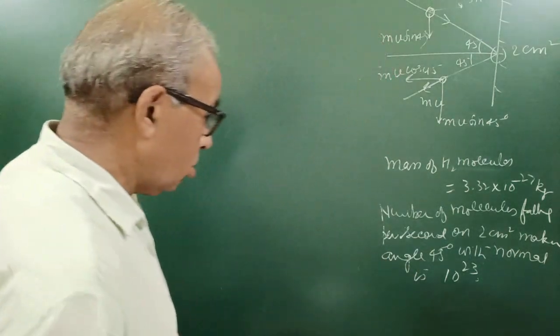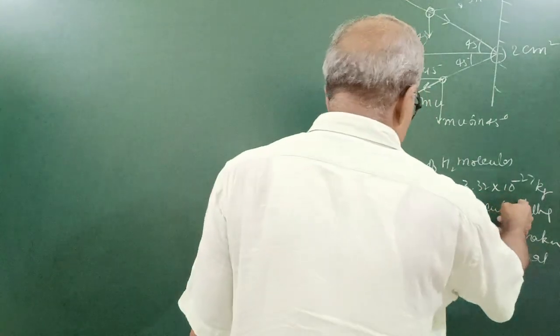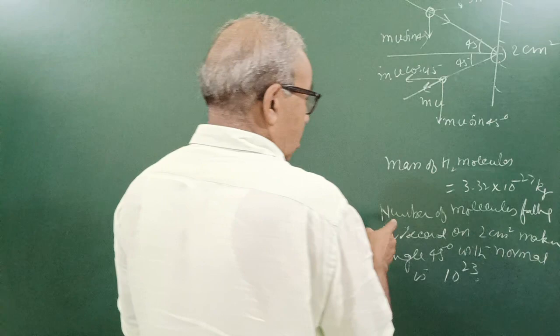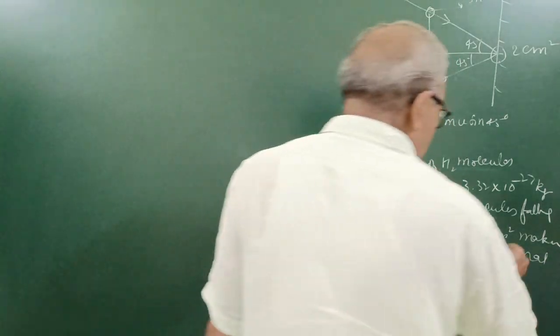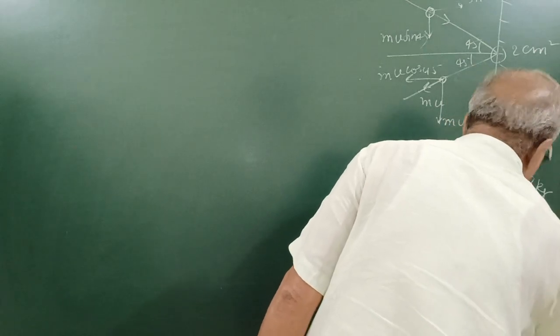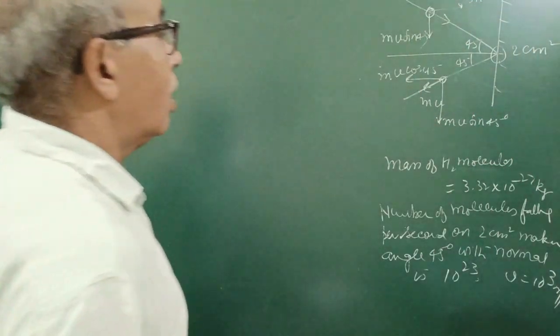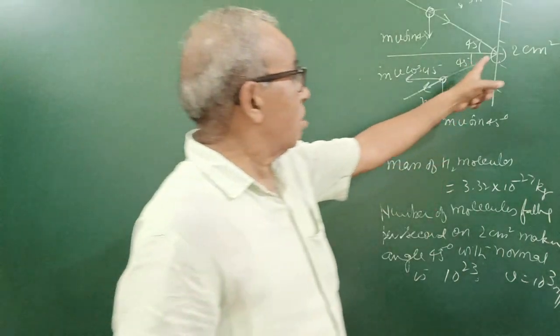Hydrogen molecules of this mass, number of molecules falling 10 to the power of 23 with velocity of 10 to the power of 3 meter per second. So you are asked here to find the pressure on the surface.